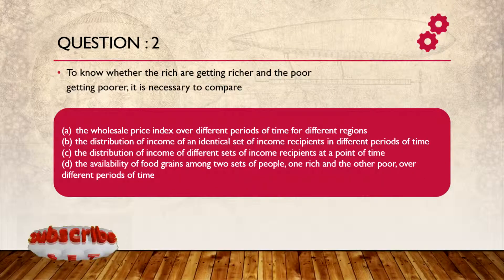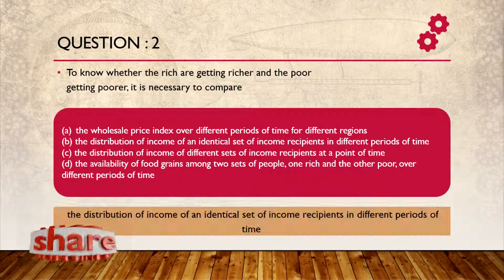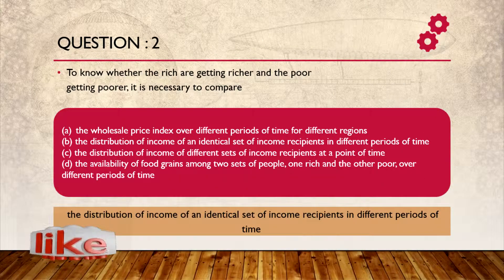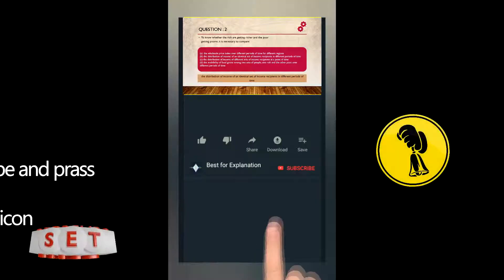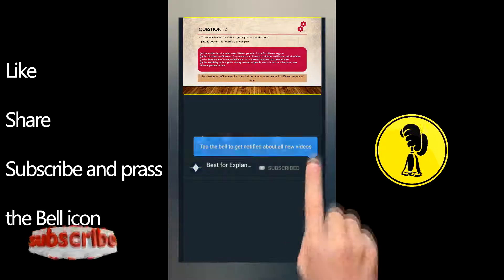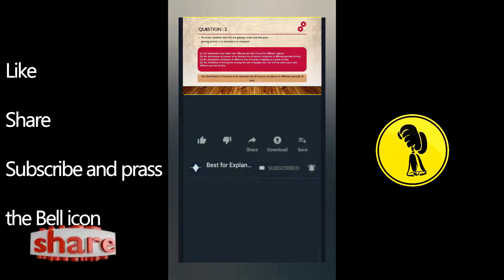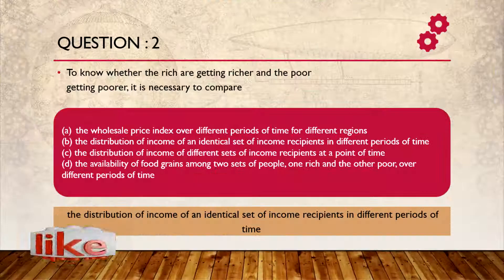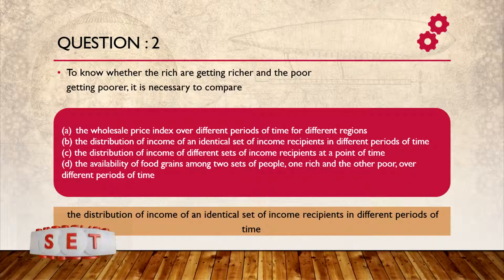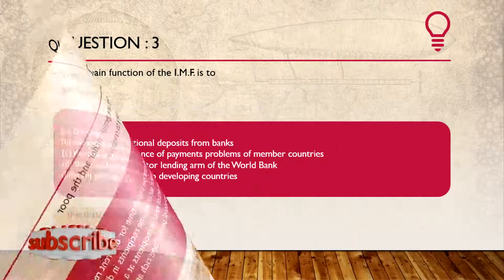Question number 2: To know whether the rich are getting richer and the poor are getting poorer, it is essential to compare the distribution of income with an identical set of income receipts in different periods of time.